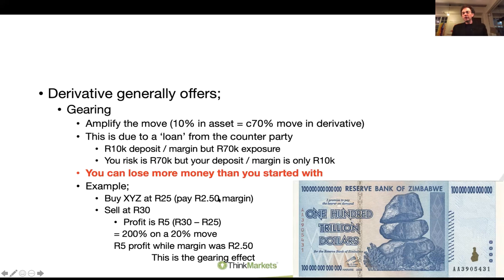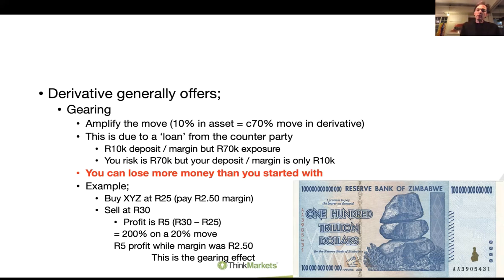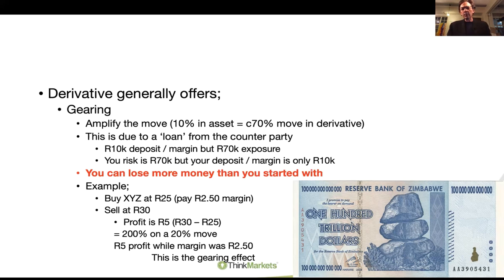If the margin had been 5 rand on a 25 rand share, your margin would have been 20% and your gearing would have been 5 times. I've ignored costs and transaction fees here just to keep it simple, but this is important - the gearing and the ability to trade short.